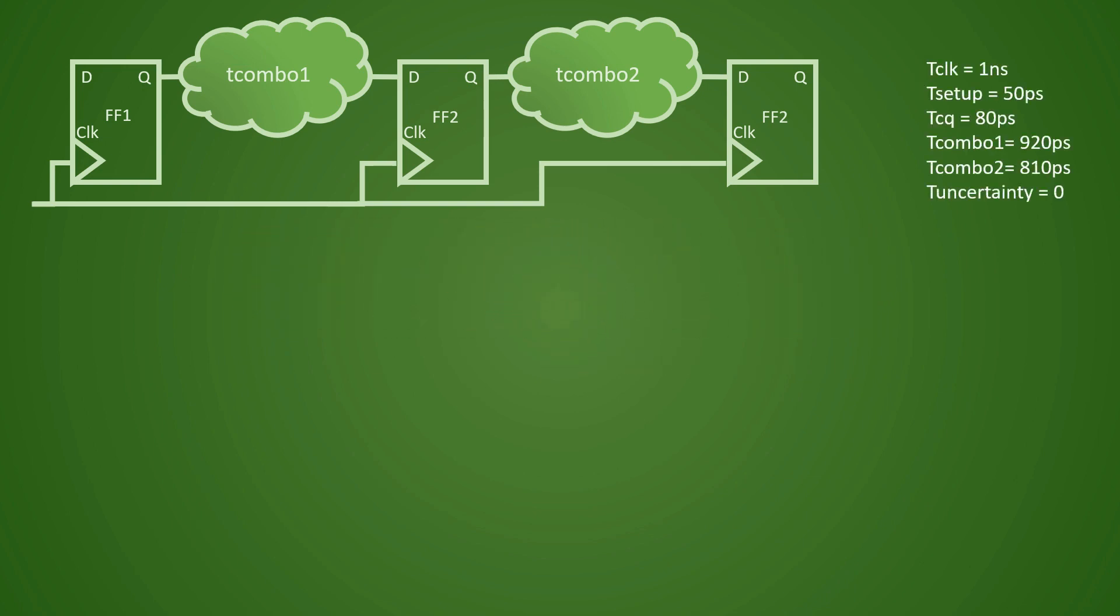To begin with, let us assume some values here. If you see, T clock is 1 nanosecond, setup time for all the flops is 50 picoseconds, and your TCQ is 80 picoseconds. Combo 1 delay, so this is your combo 1, is 920 picoseconds.